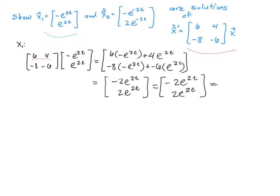That is equal to x1 prime. So we've shown that A times x1 is equal to x1 prime. Now we'll do the same exact thing for x2.